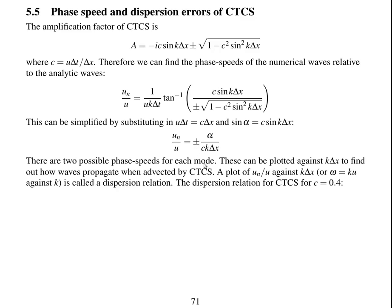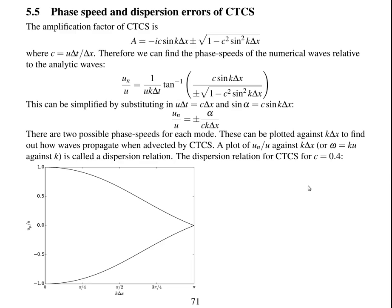Another thing to notice is that there are two possible phase speeds for each mode. Both of these phase speeds can be plotted against k delta x in order to find how waves propagate when advected by CTCS. A plot of the numerical phase speed against k delta x, or similarly a plot of the angular frequency against k, is called a dispersion relation. And we can plot the dispersion relation for CTCS for a Courant number of 0.4.